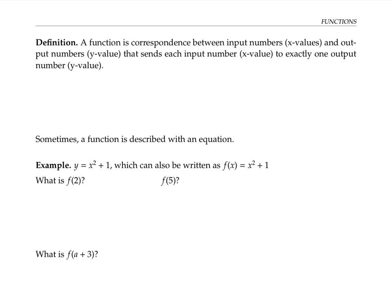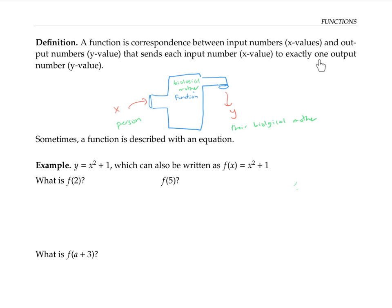Sometimes a function is thought of as a rule or machine in which you can feed in x values as input and get out y values as output. A non-mathematical example of a function might be the biological mother function, which takes as input any person and gives as output their biological mother. This function satisfies the condition that each input person gets sent to exactly one output person, because any person has just one biological mother. So that rule does give you a function.